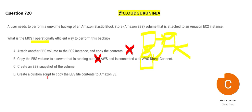Option C says create a custom script to copy EBS file content to S3. But how would you bring the data back to EC2 or EBS? That step is not explained. So I don't agree with this one because it is incomplete.